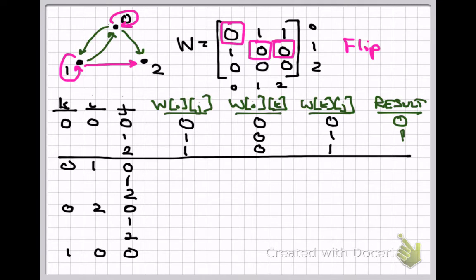In the third line, w[i][j] = w[0][2] = 1. w[i][k] = w[0][0] = 0, and w[k][j] = w[0][2] = 1. The result of (0 AND 1) OR 1 = 1. That completes the first run through the innermost loop.